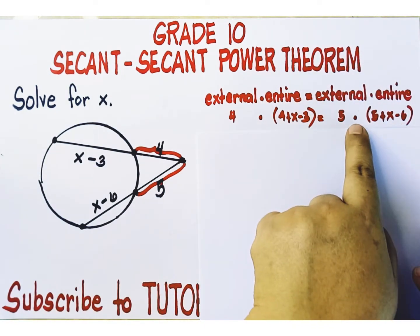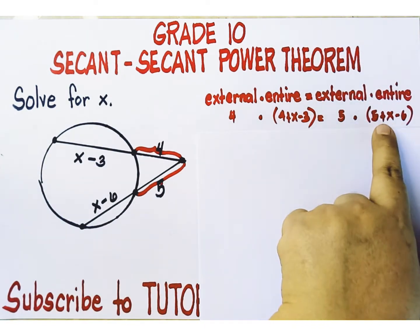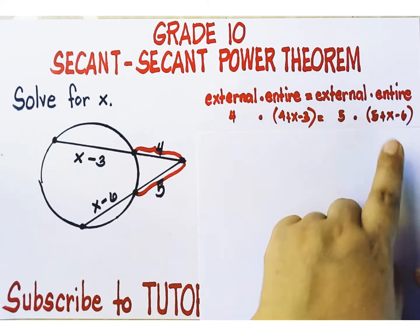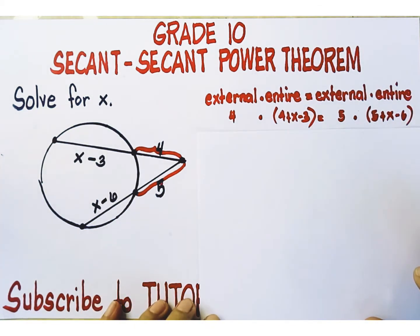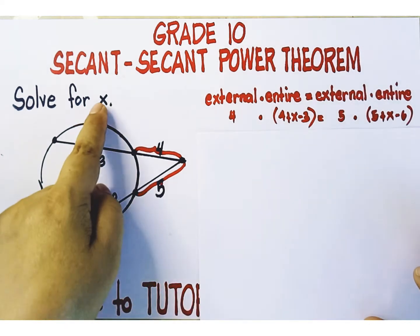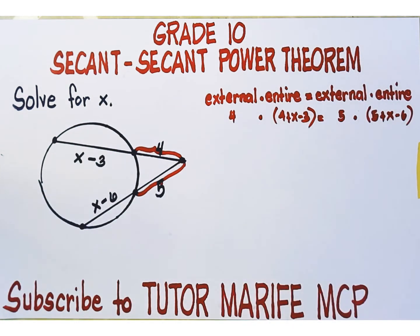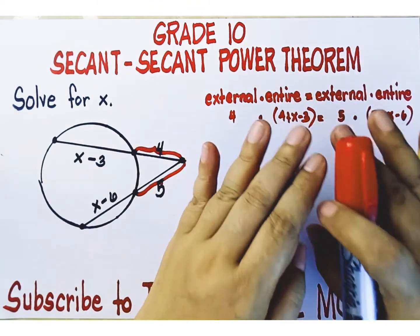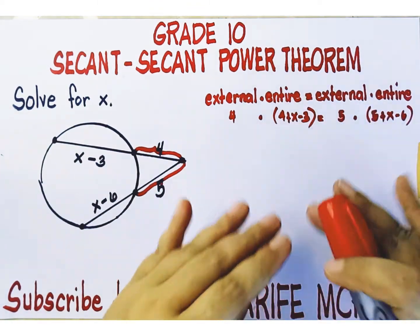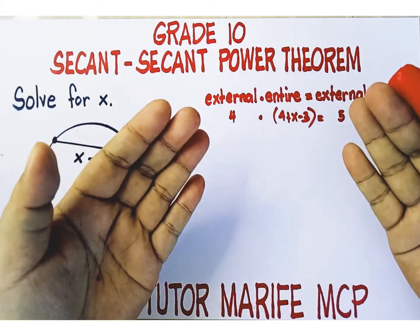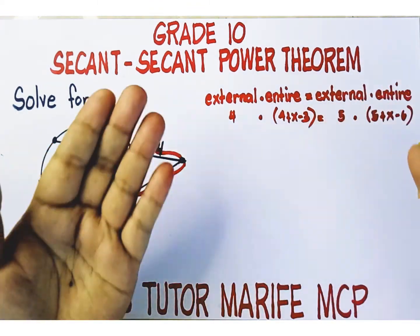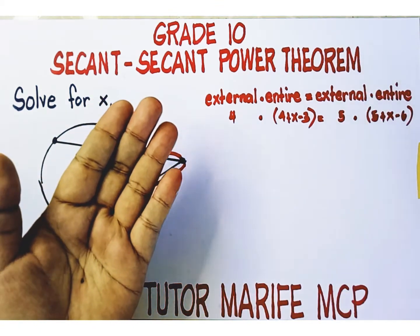So it's five multiplied by the expression five plus x minus six. Our goal is to solve for x. In solving any equation involving grouping symbols, we have to simplify the expression within the grouping symbols.